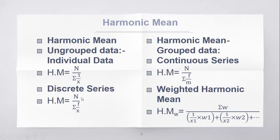For discrete series, harmonic mean is equal to n by sigma f by x. For continuous series, harmonic mean is equal to n by sigma f by m.